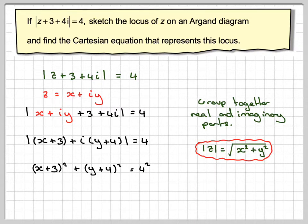Now, you will recognize this is the equation of a circle with centre minus 3 minus 4 and radius 4.